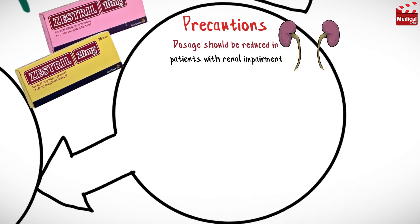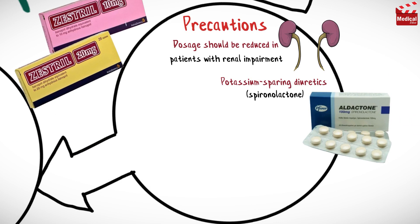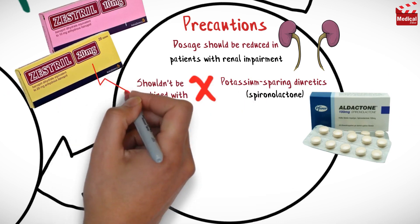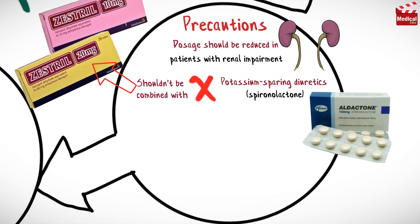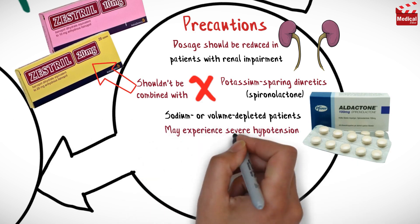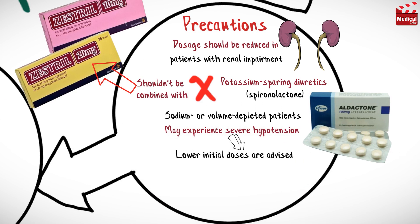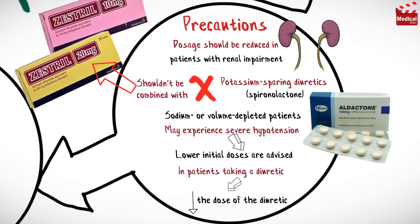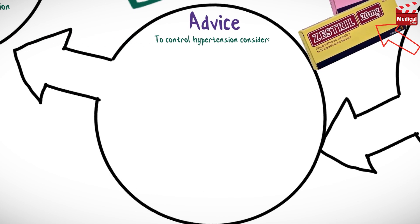Dosage should be reduced in patients with renal impairment. Potassium-sparing diuretics such as spironolactone shouldn't be combined with lisinopril because of a high risk of hyperkalemia. Sodium or volume-depleted patients may experience severe hypotension, so lower initial doses are advised. In patients taking a diuretic, reduce the dose of the diuretic when adding lisinopril.